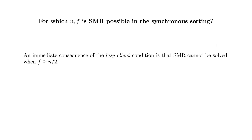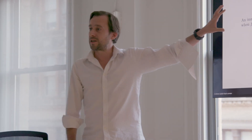An immediate consequence of the lazy client condition: SMR can't be solved when f is greater than n over 2, because you need f plus 1 confirmations. The dishonest processors could just sit there and never send confirmations, so you'd never get anywhere. That said, this needn't be true if SMR is set up slightly differently.